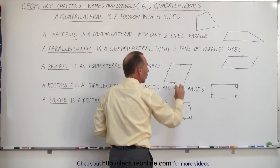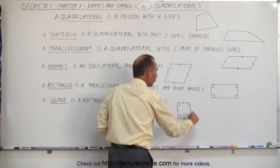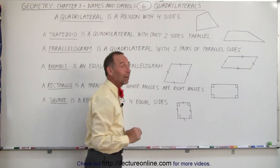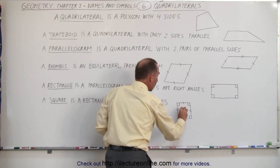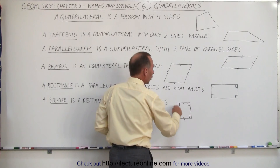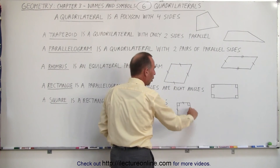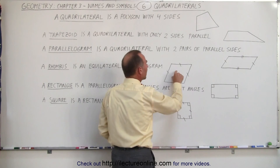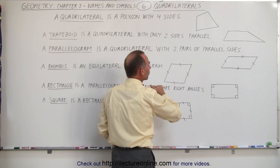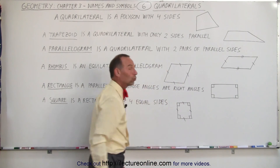Just like it is for a rhombus, a square must have all four sides the same and all four angles the same. So the difference between a square and a rhombus is that the sides are the same in both, but for a square all the angles are right angles, whereas for a rhombus they are not. That makes one a rhombus and the other a square.